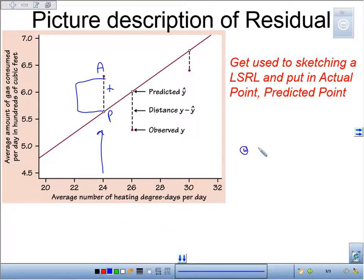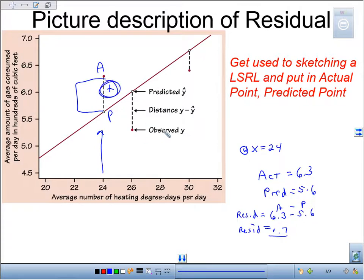So at x equals 24, the actual value was, let's say, 6.3. Our predicted value was 5.6. So my residual would be 6.3 minus 5.6. Again, actual minus predicted, which is 0.7 positive. That should make sense because it's positive—this was above the line.